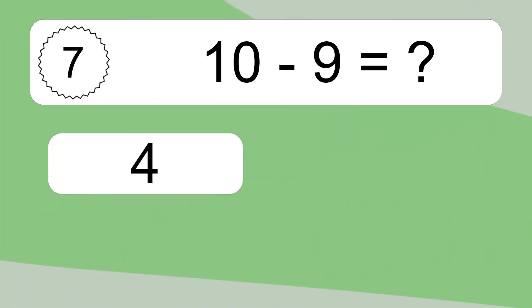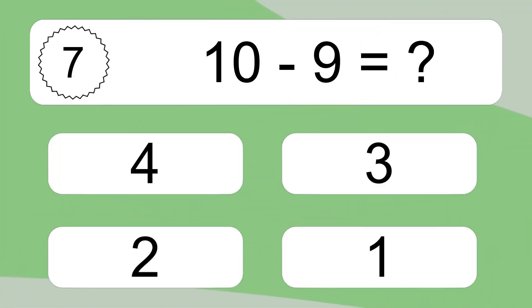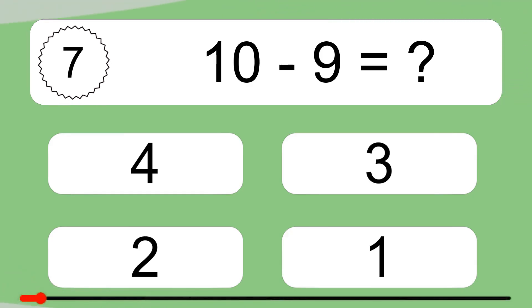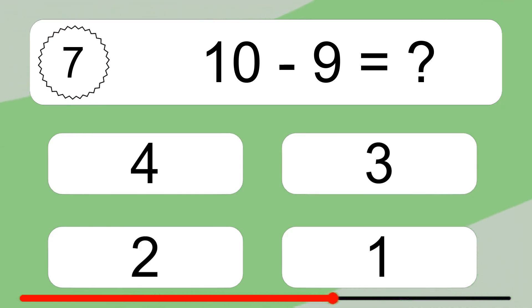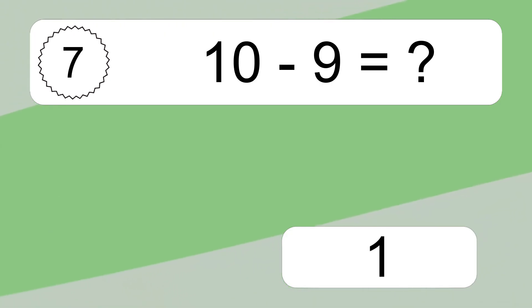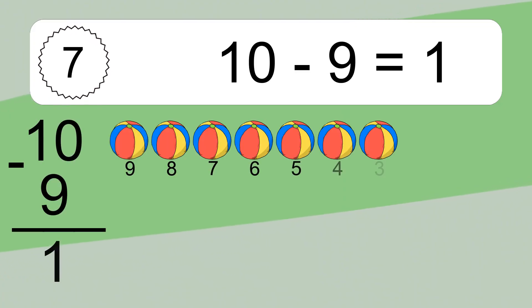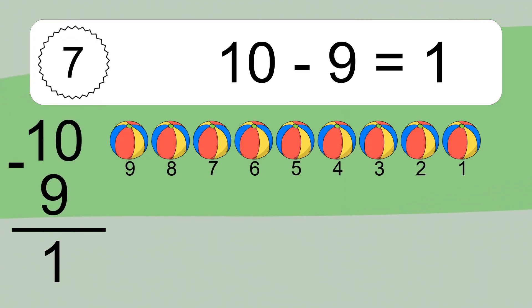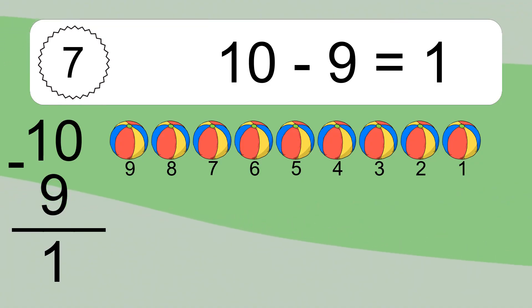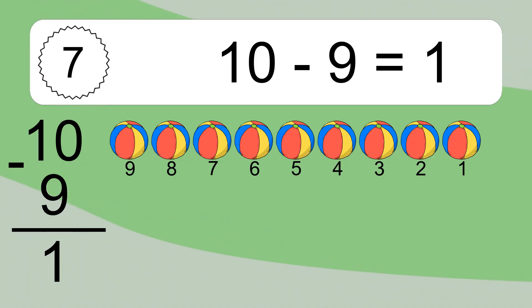10 minus 9 equals what? 10 minus 9 equals 1. Let's count it. 9, 8, 7, 6, 5, 4, 3, 2, 1.